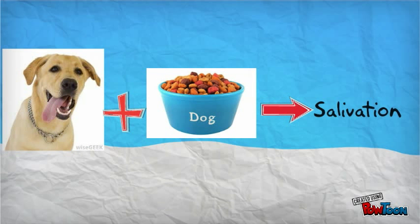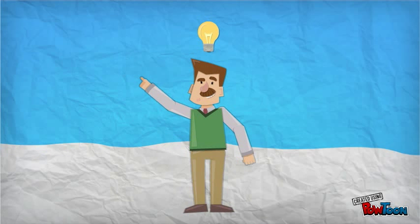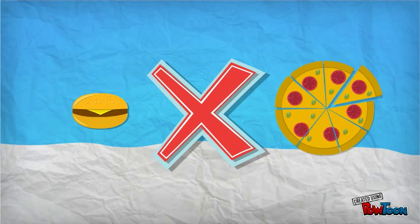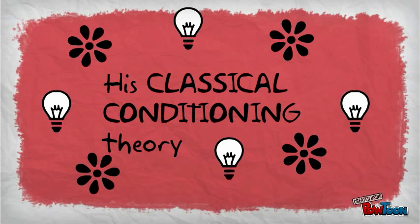During the 1890s, Ivan Pavlov researched the salivation of dogs in response to being fed. He noticed the dog would begin to salivate whenever he entered the room, even when he was not bringing it food. This revelation was the beginning of his classical conditioning theory.